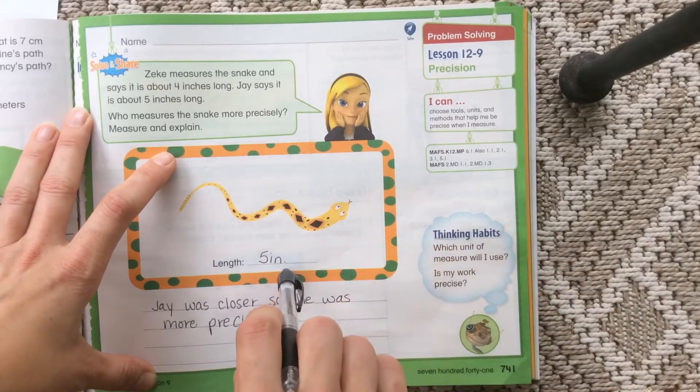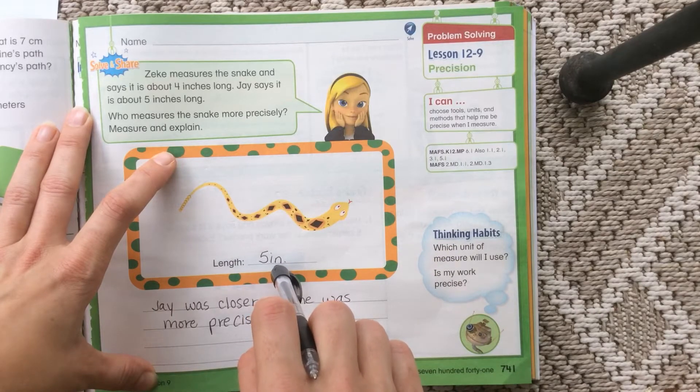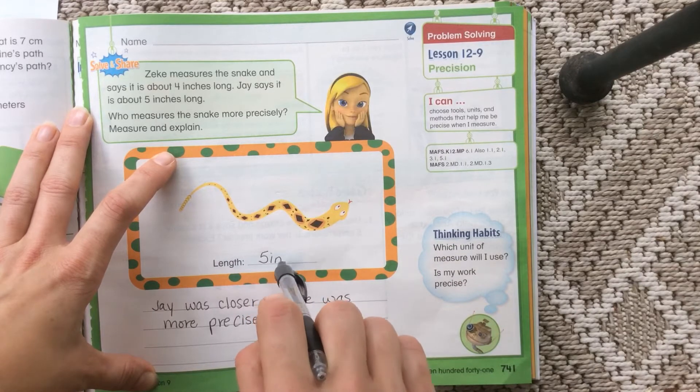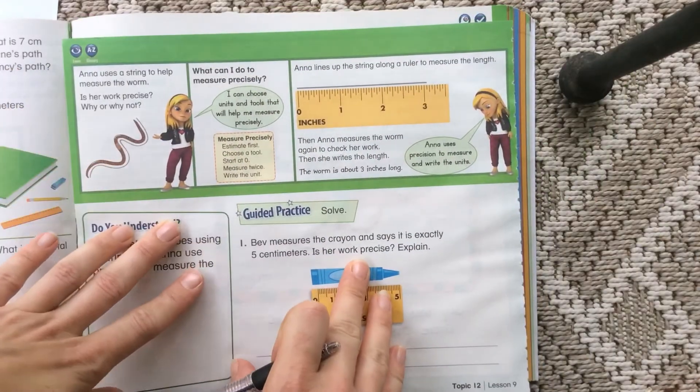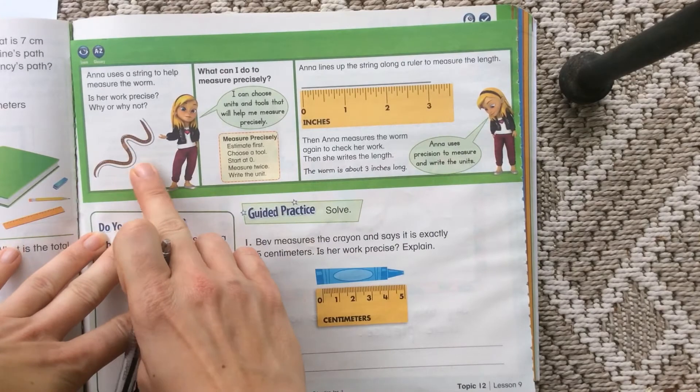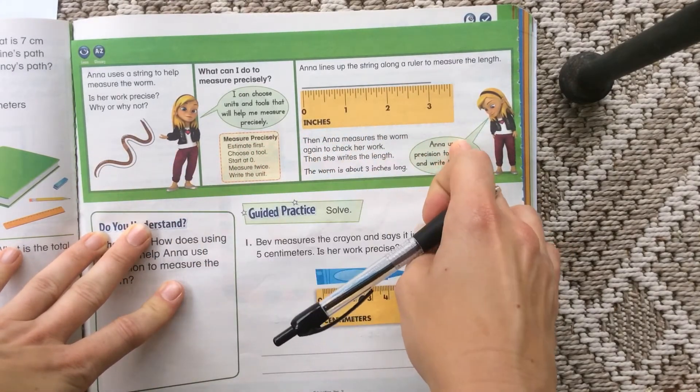It's also really important to be precise. When we are precise, we put what unit we're measuring in. So here I put inches. I did use the abbreviation. You could use the abbreviation or the word. So on the back, the girl is talking about different ways that we can be more precise. This is a great reminder for you.